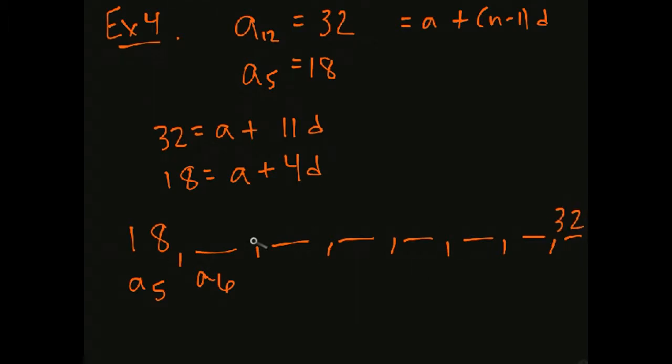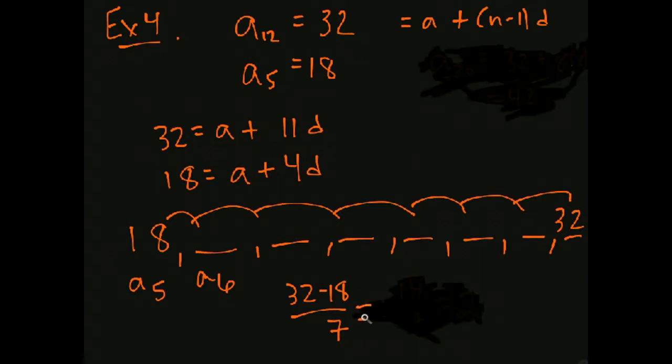So how many times have I added, and how much do I have? So I've added 7 times. In other words, 12 minus 5. So I've added 7 times, and my difference here between the two, what is it? So I take 32 minus 18, and I'm going to divide that into the 7 different times that I've added. And that'll give me my difference that I need.